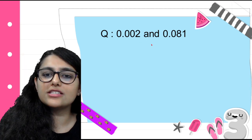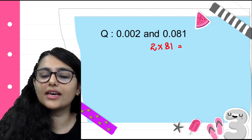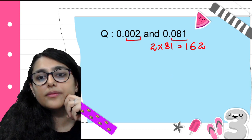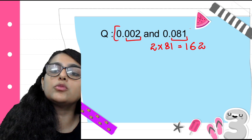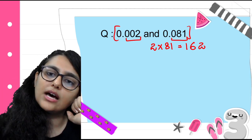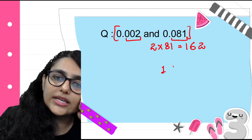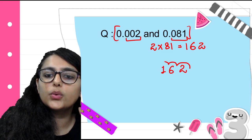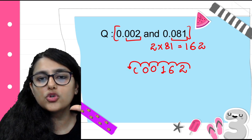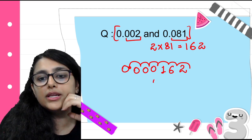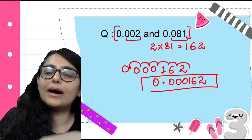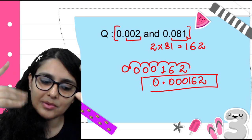Next example: 0.002 × 0.081. Ignore zeros and decimal — what remains is 2 × 81. 2 × 1 = 2, 2 × 8 = 16, so 162. Now count total decimal places: 3 from the first number + 3 from the second = 6 total. Count 6 places from the right in 162: 1, 2, 3, 4, 5, 6 — fill empty spaces with zeros. So my answer is 0.000162.